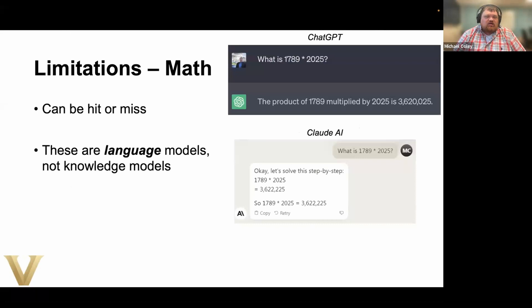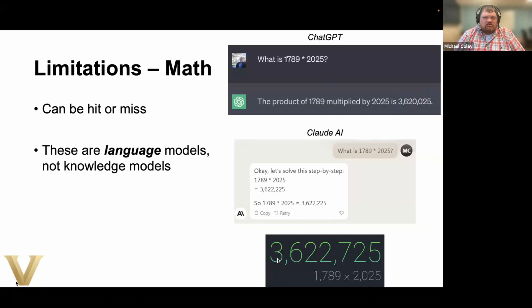One smaller issue most people don't think about: some AI tools aren't great at math because they are language tools, not knowledge tools. I asked ChatGPT what is 1789 times 2025 and got one answer; I asked another tool called Claude and got a different answer — and neither was correct. If you put that into Bing, you get the correct answer, but that's because Bing is a search engine that has been able to do math for years — it's just a different tool set.